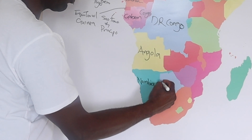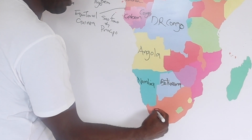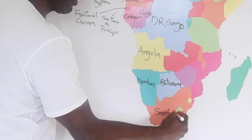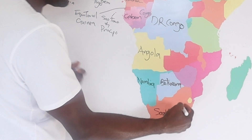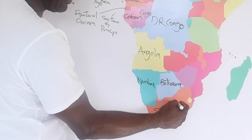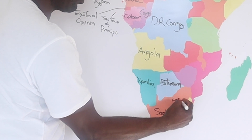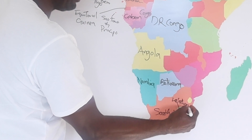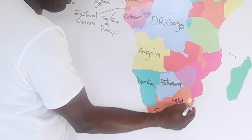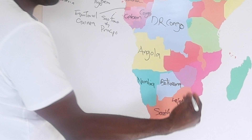And obviously we have Botswana here. And South Africa of course. And right inside South Africa we have Lesotho, which is completely surrounded by South Africa. And just another very small country there is Eswatini, who used to be Swaziland.